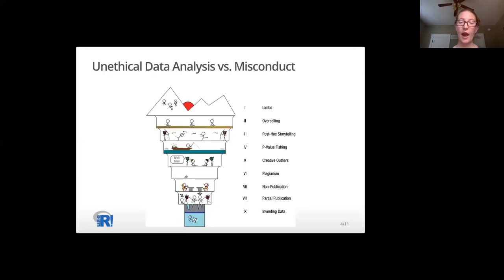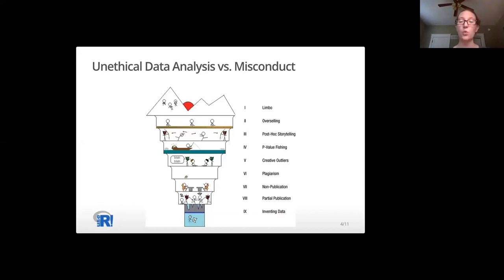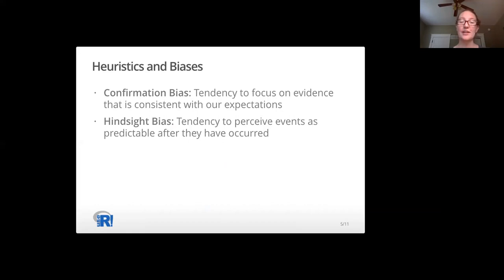I introduce the concept of the nine circles of scientific hell. Neuroskeptic drew this comic inspired by XKCD and Dante's Inferno. The levels range from overselling in level two, which is related to overstating the results of our analyses, to inventing data in level nine. In class, we talk about how there's this gray area between unethical data analysis and misconduct that involves intentional deception. We want to do ethical data analysis, which involves not deceiving our audience with statistics.